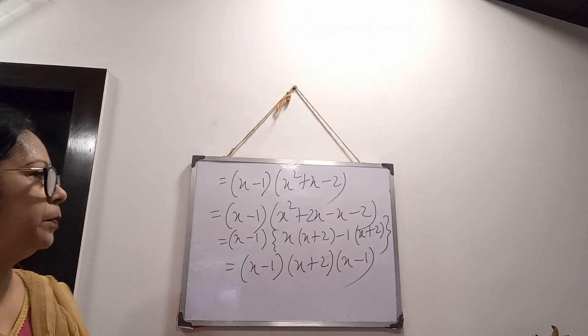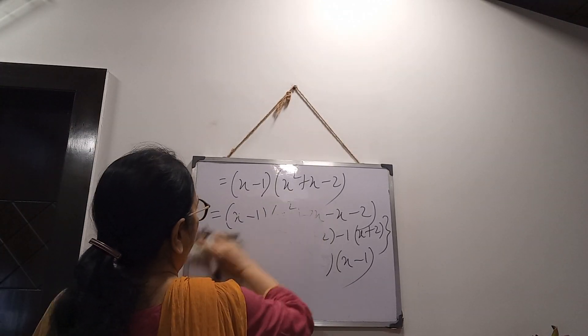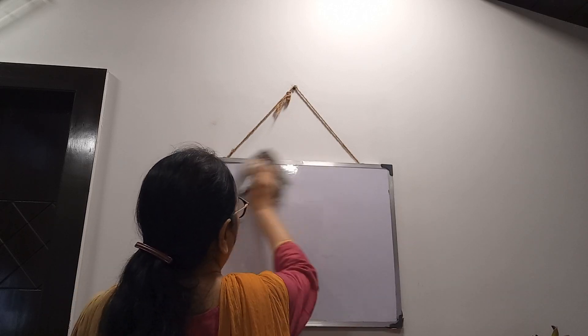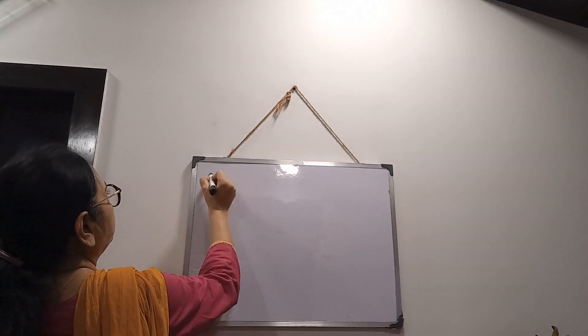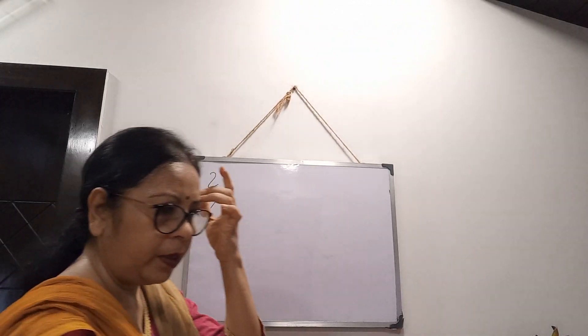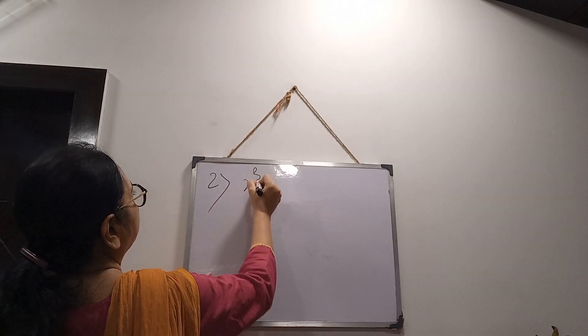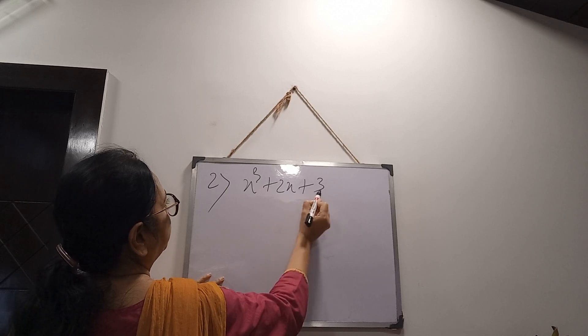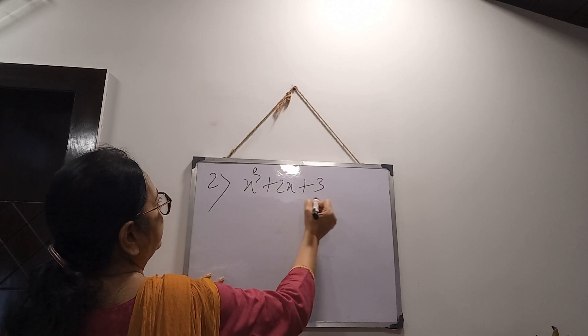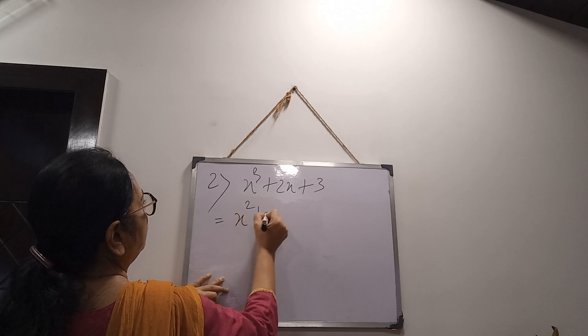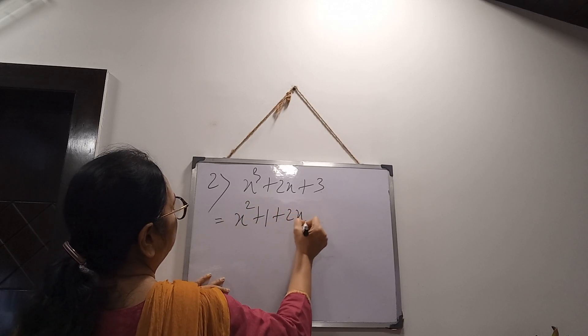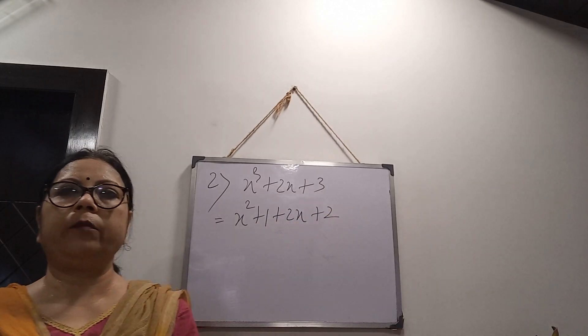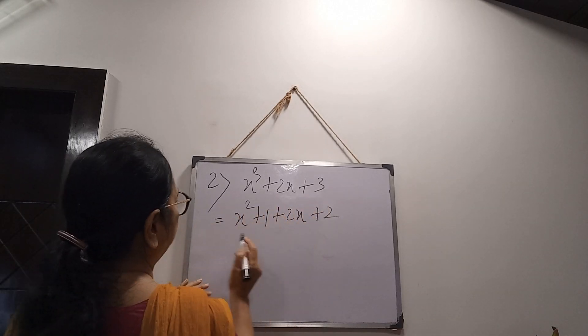Now second one. See, in this way I have told you what to do. The constant term you will make same as the coefficient of x. So number 2 is there: x³ + 2x + 3. So there is 2. I have to make it 2. But there is 3. So I am taking 1 from there. Now see what I have done. It is also 2. It is also 2. Why I am doing this? To take common.